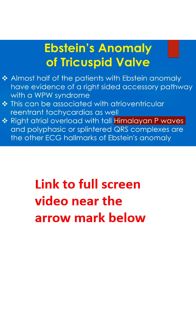Almost half of the patients with Ebstein's anomaly have evidence of a right-sided accessory pathway with WPW syndrome. This can be associated with atrioventricular reentrant tachycardias as well. Right atrial overload with tall Himalayan P waves and polyphasic or splintered QRS complexes are the other ECG hallmarks of Ebstein's anomaly.